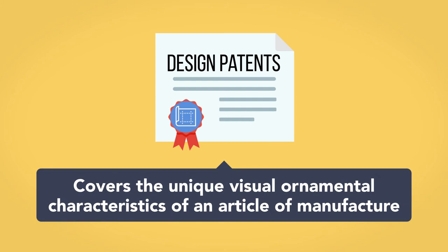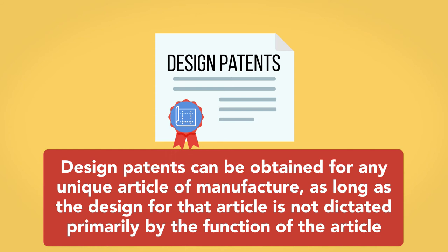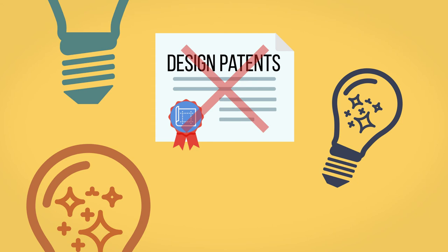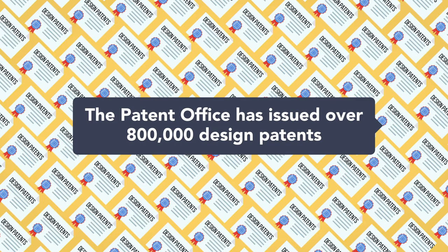Design patents cover the unique visual ornamental characteristics of an article of manufacture. Design patents can be obtained for any unique article of manufacture, as long as the design for that article is not dictated primarily by the function of the article. For example, a basic screw would not be entitled to design patent protection because its design is dictated primarily by its function. The patent office has issued over 800,000 design patents.